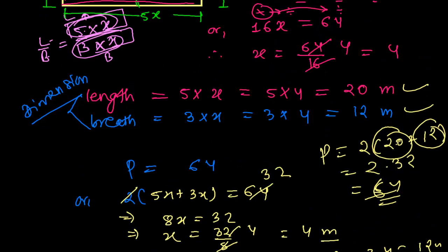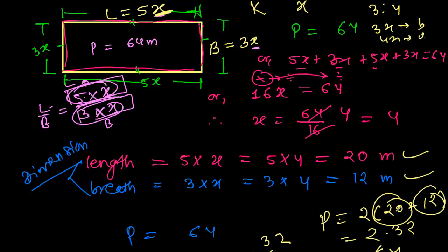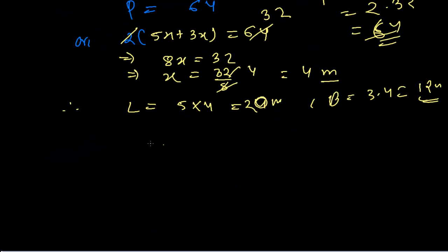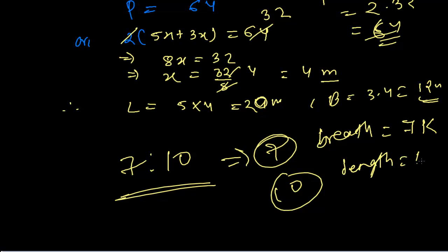You can solve this using any method, but the key concept is: when dimensions are given in a ratio, you must suppose them using a variable. For example, if the ratio is 3:4, suppose breadth is 3X and length is 4X. If the ratio is 7:10, suppose breadth is 7K and length is 10K, then find K to get the actual dimensions.